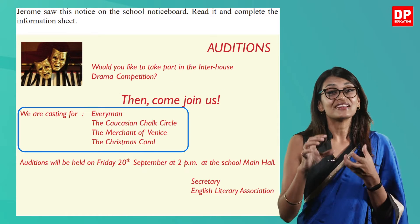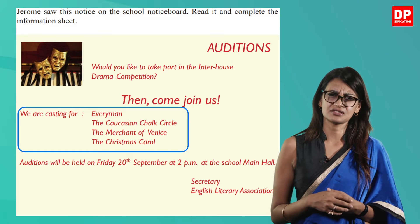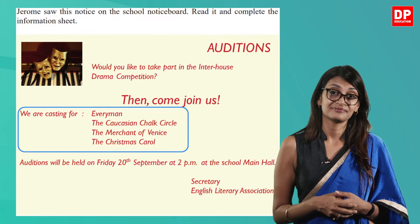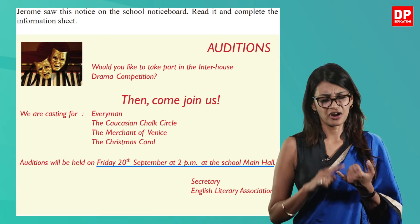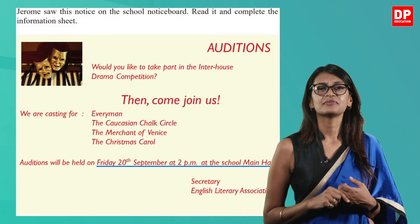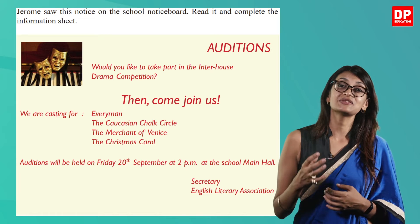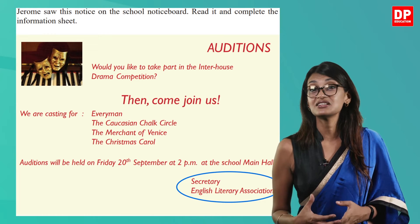You will also notice that the names of the dramas you can audition for are given in a list — that's important information because based on what they have, you would want to try out. The date, time, and venue have also been given: Friday 20th September at 2 p.m. at the school main hall. The notice ends with the person or organization writing it — the Secretary of the English Literary Association.